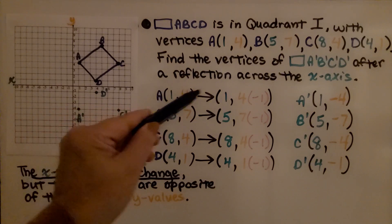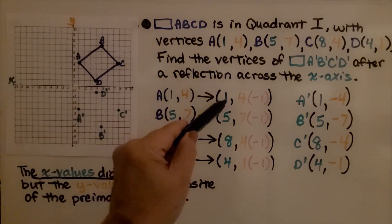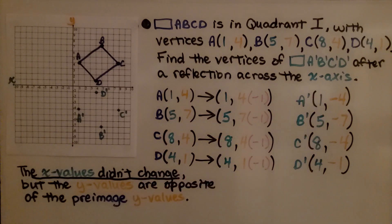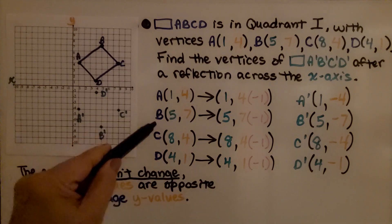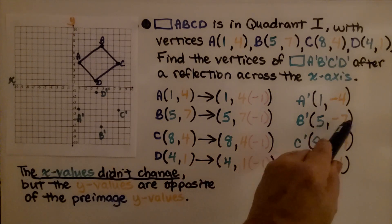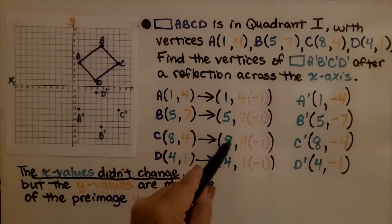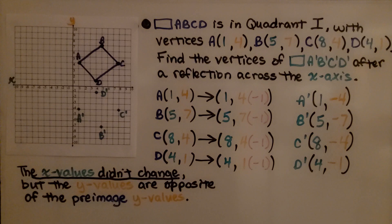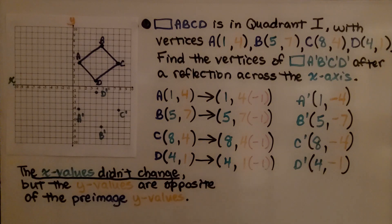Going from the pre-image, x is going to stay the same and y is going to be multiplied by negative 1. For A: 4 times negative 1 is negative 4, giving A prime at 1, negative 4. For B: 5 stays the same, 7 times negative 1 gives 5, negative 7. For C: 8 stays the same, positive 4 times negative 1 becomes negative 4. For D: y is 1, multiplied by negative 1, giving D prime at 4, negative 1. The x-values did not change, but the y-values are opposite of the pre-image y-values.